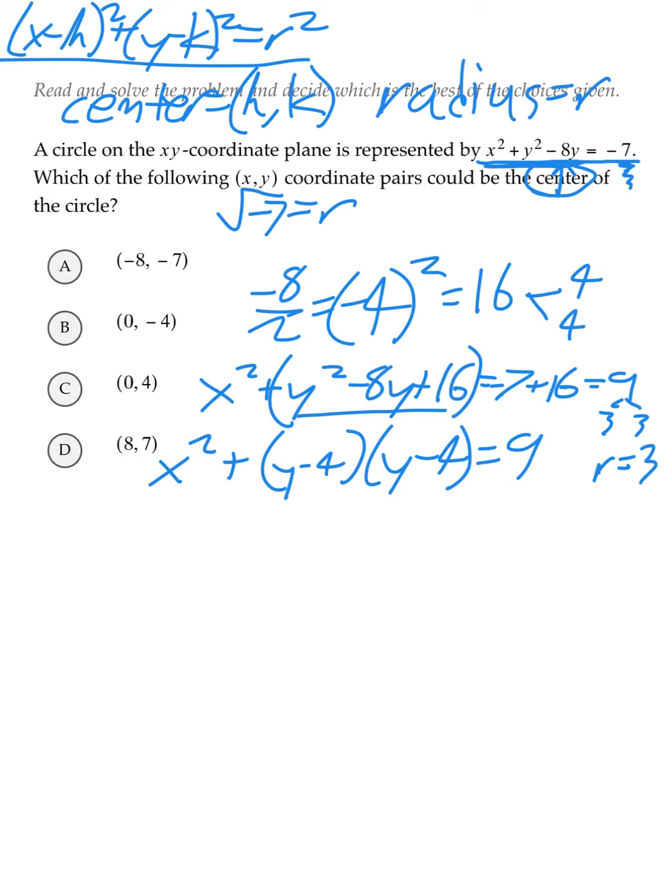Now, these two binomials, because they are the same, y minus 4, y minus 4, we can rewrite them as y minus 4 squared. This expression looks a lot more familiar because we saw it up in the standard form equation above, y minus k squared. So, we have to rewrite x squared as x minus h squared.